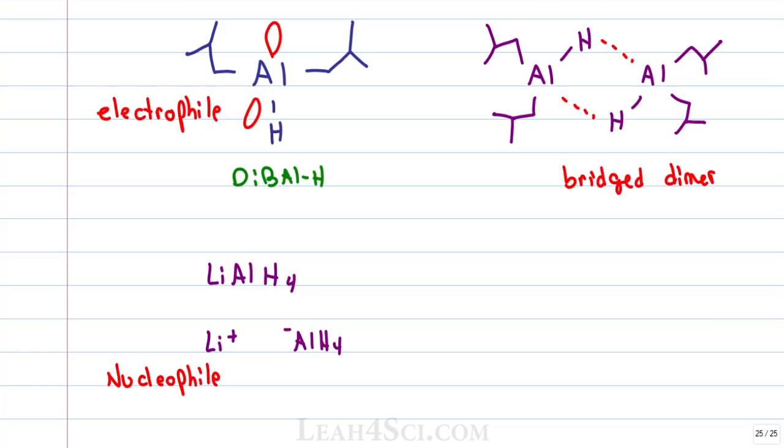Esters and nitriles will go all the way to a primary alcohol, but DIBAL is bigger, it's sluggish, it's got a lot of baggage and it doesn't want to do a complete reaction. So once it starts it'll only do one reduction and then stop at the aldehyde because it doesn't feel like going all the way.